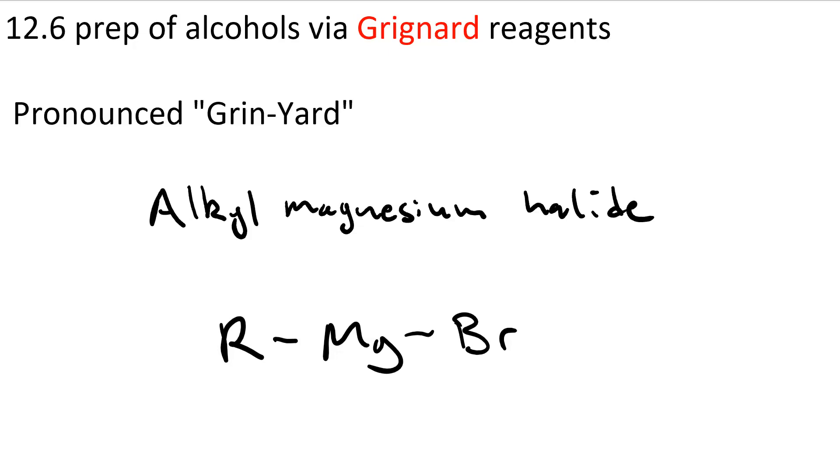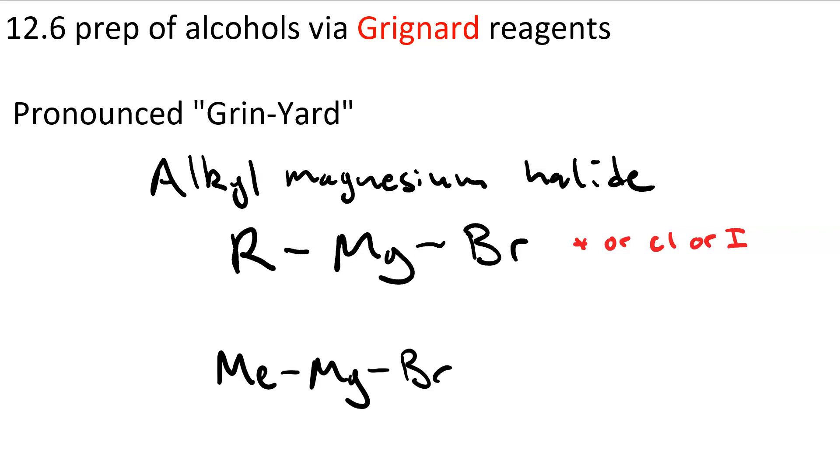That bromine could be chlorine or iodine as well. Here's an actual Grignard Reagent, a specific one. This one is called methyl magnesium bromide.